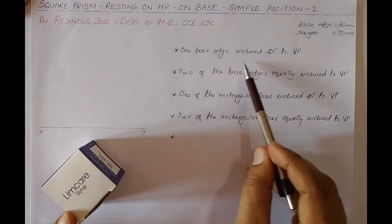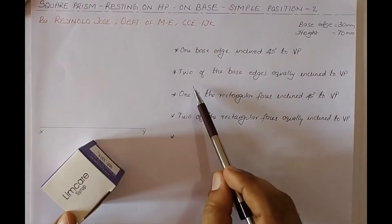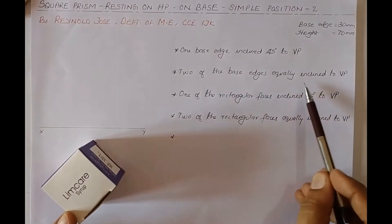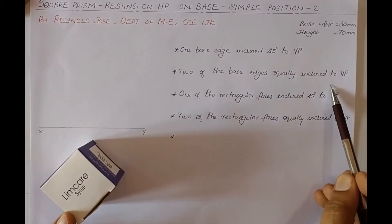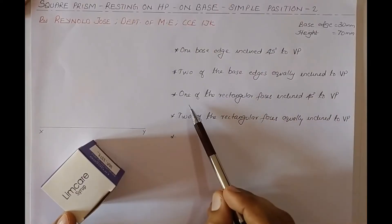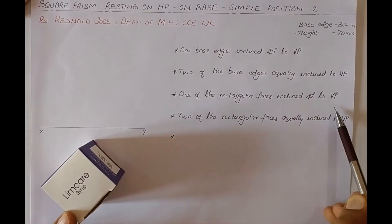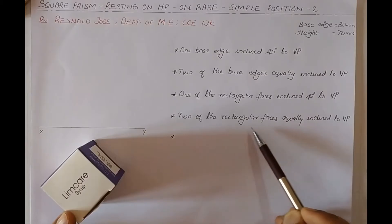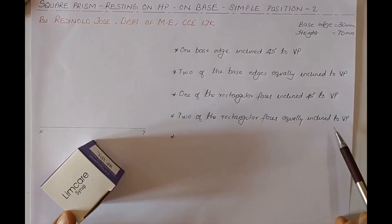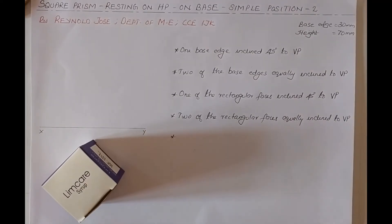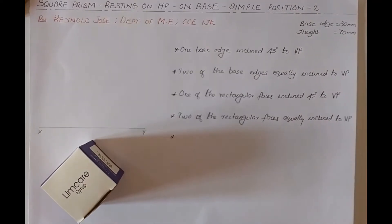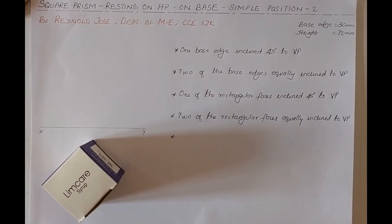In summary: one base edge inclined 45 degrees to VP; two base edges equally inclined to VP (for a square, equal inclination is 45 degrees); one rectangular face inclined 45 degrees to VP; or two rectangular faces equally inclined to VP. All these describe the same simple position. Let us learn how to draw this simple position.